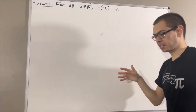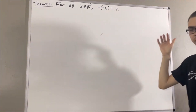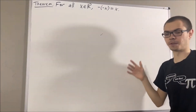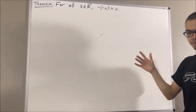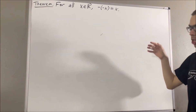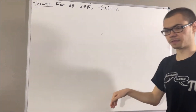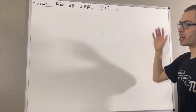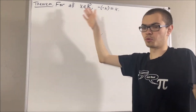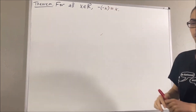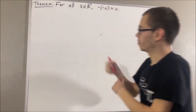Now in this series, we are using a list of 10 axioms for the real number system, and I'll leave that list of axioms in the description of the video below. Now in proving this theorem, we are going to be using the following axioms.